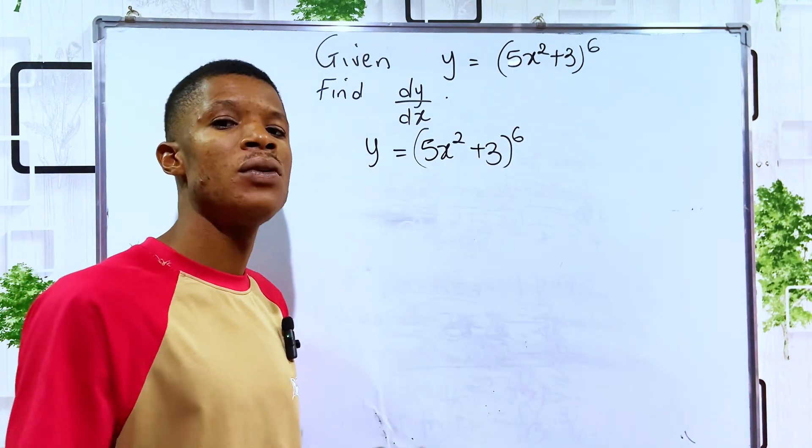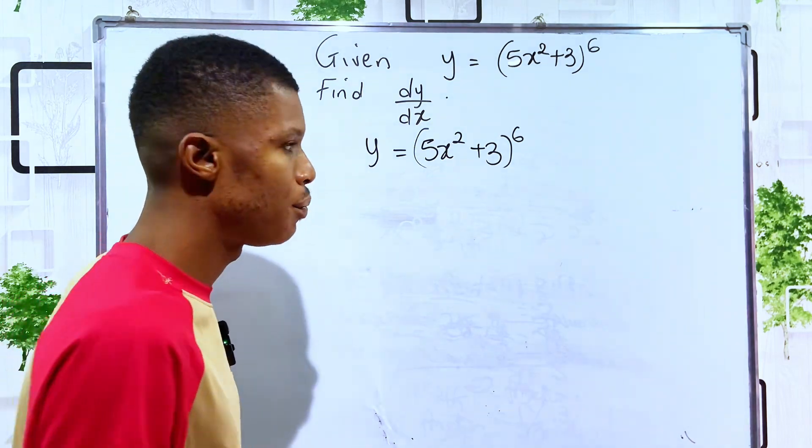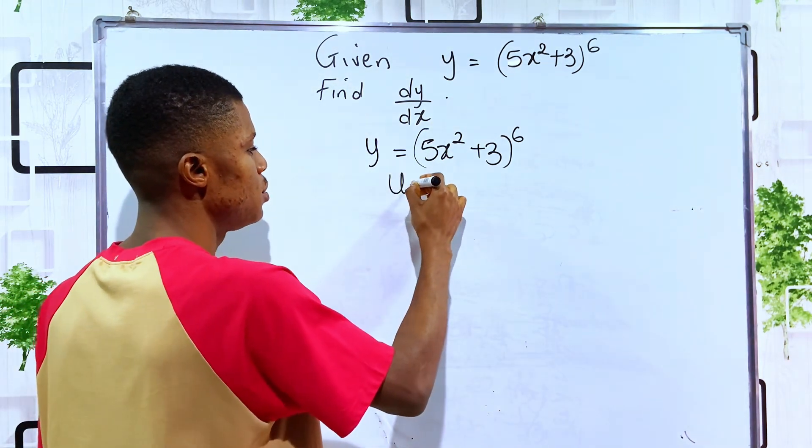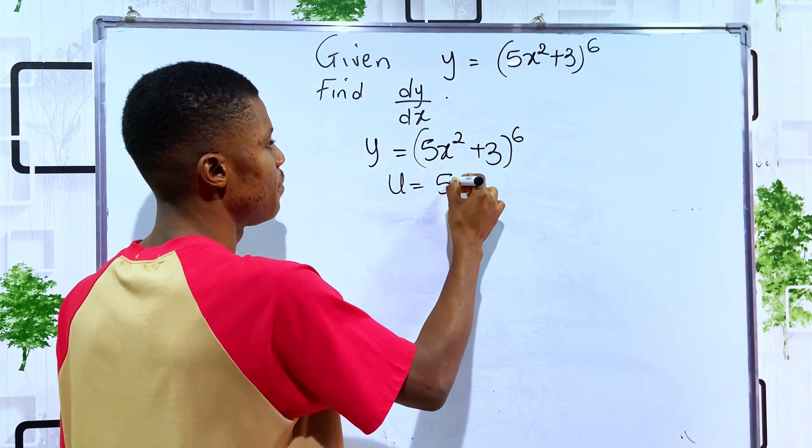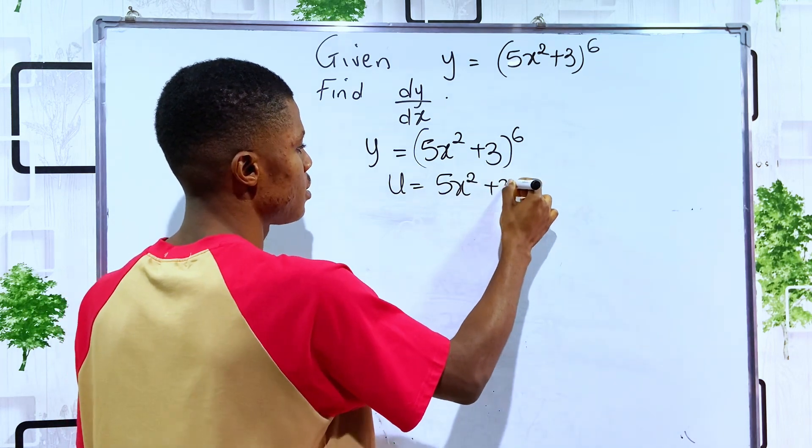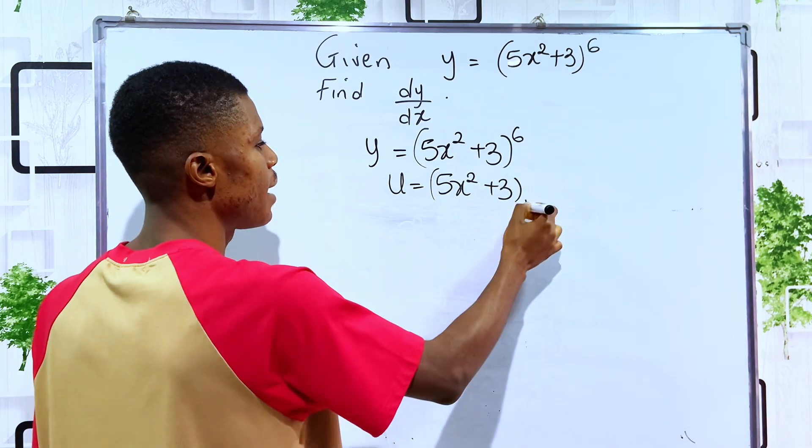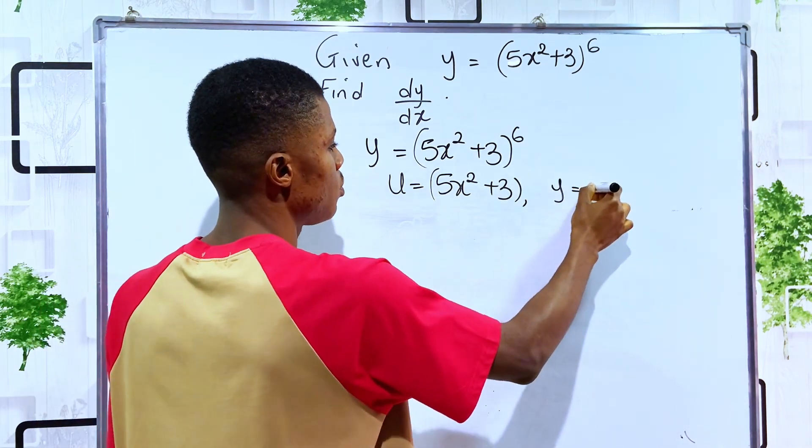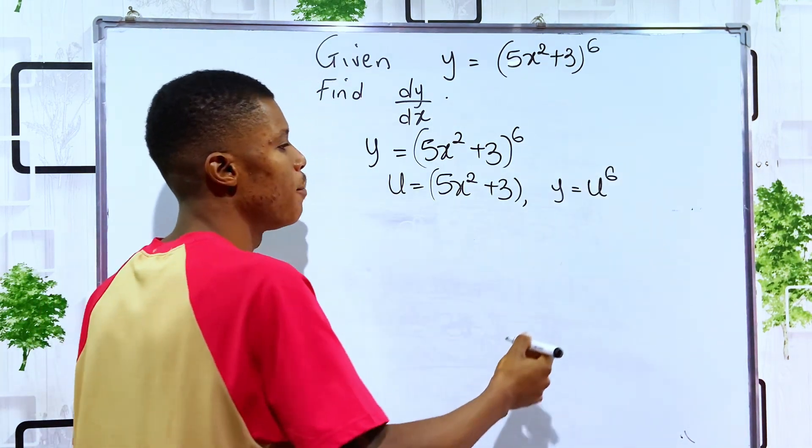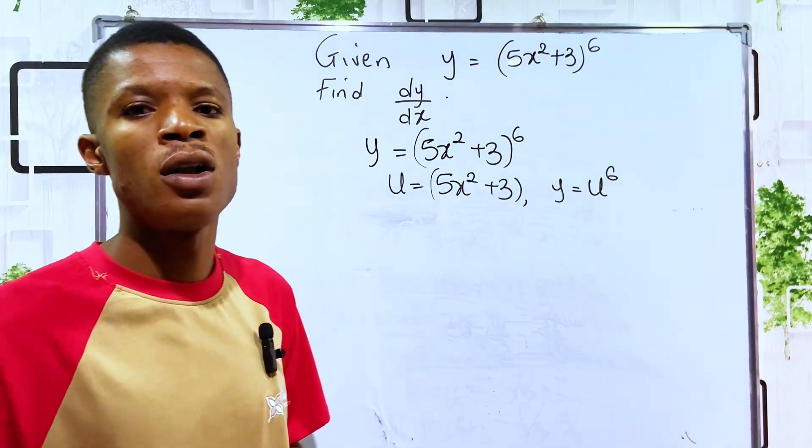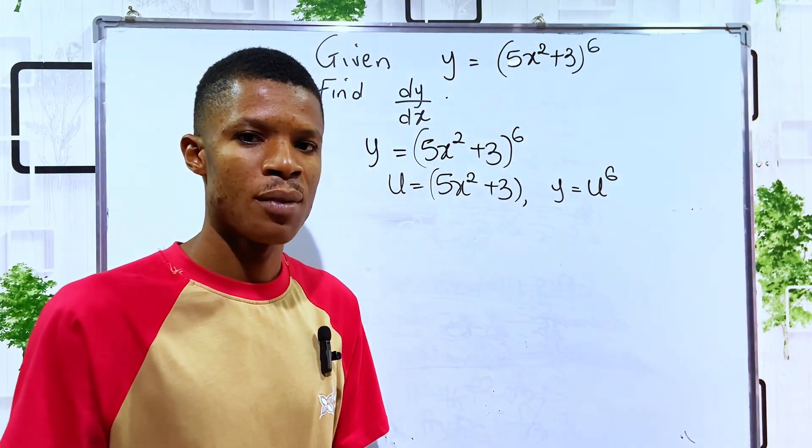Then the term in the middle we will define to be our u. So we can now say that u equals 5x squared plus 3. If u is this, then y can be written as y equals u to the sixth power. We have now done what we call the function of a function.